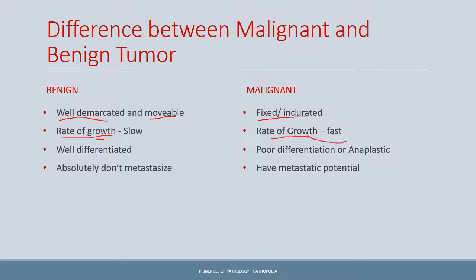In contrast, malignant tumors are fast growing — this can be understood in the same way, since malignant tumors metastasize and therefore should have the ability to grow fast. However, again this is a general principle, and some malignant tumors may be slow growing and present later in life.